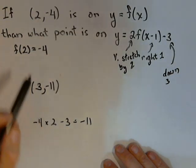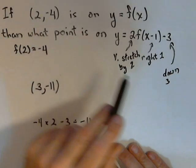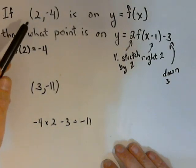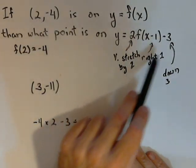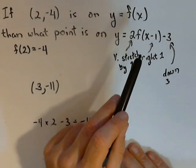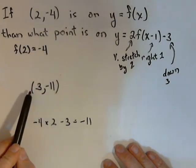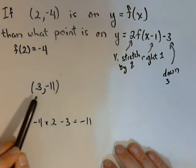This is the corresponding point to this point on our transformed graph. The point (2, -4), when we do these transformations to our function, whatever our function is, the new point would be moved to (3, -11).